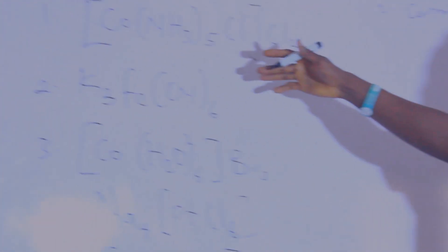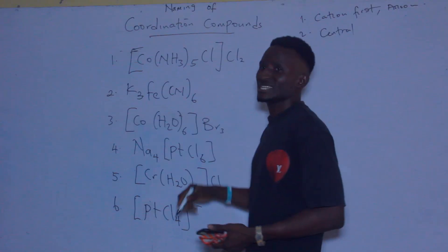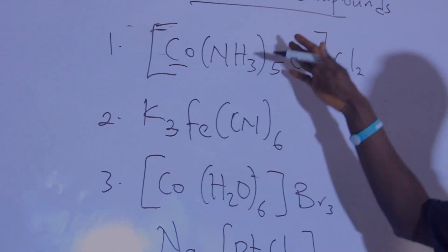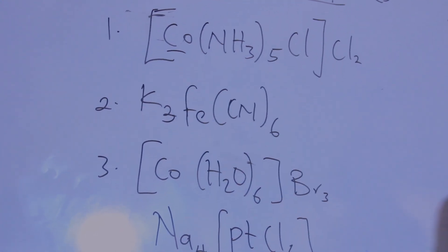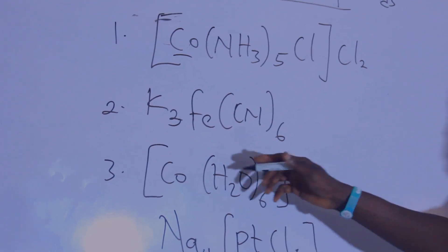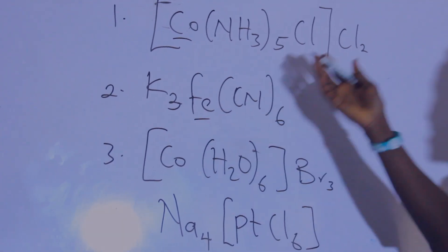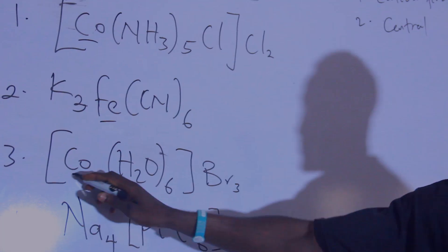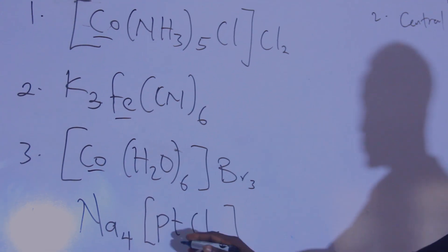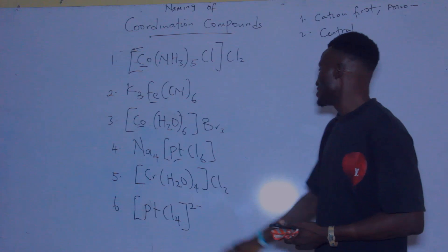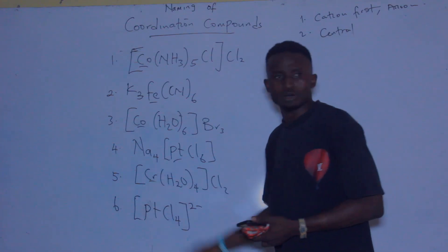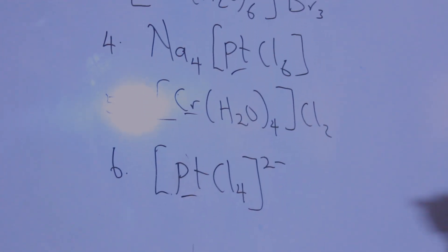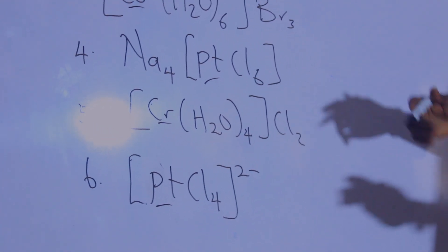Now, the central atom of the first compound is cobalt. For the second one we have iron, then cobalt, then platinum, then chromium, and also platinum. So how are we going to go about naming these?